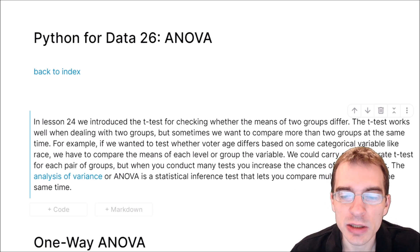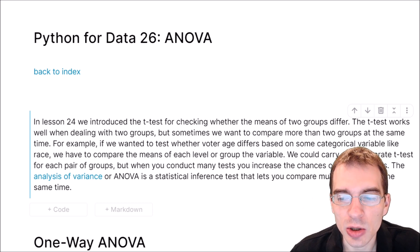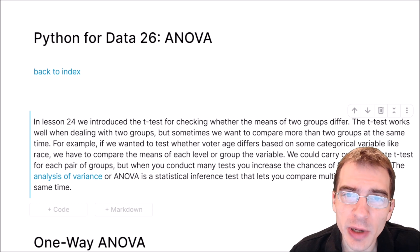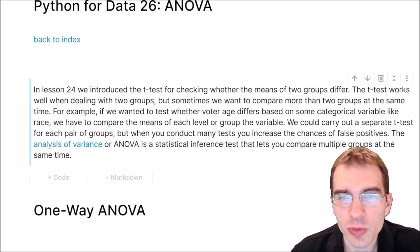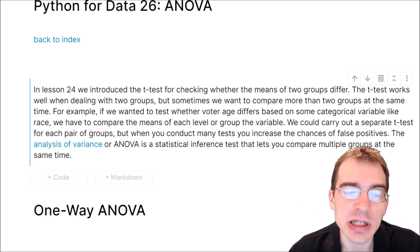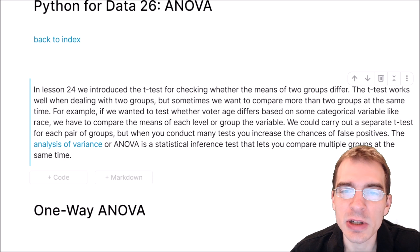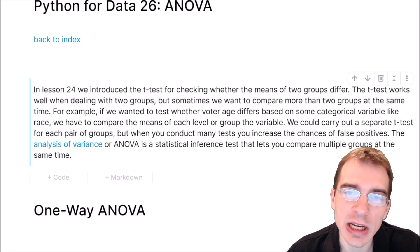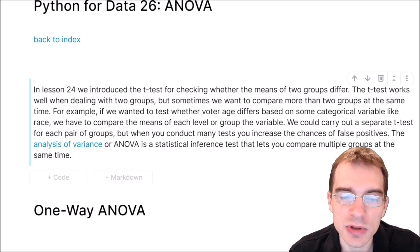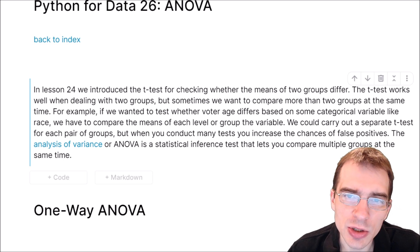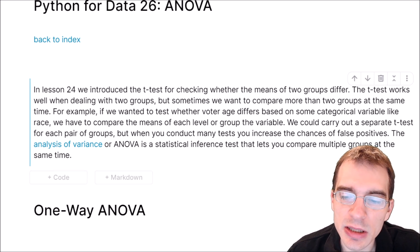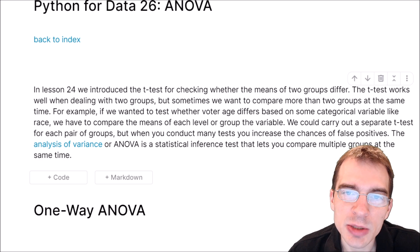For example, if we wanted to test whether voter age differs based on some categorical variable — say the voter's race — we would have to compare the means within each group of that categorical variable. We could try to carry out a separate t-test for every single pair of groups, but when you conduct many different tests like that, you increase the chances of getting false positives. The analysis of variance, or ANOVA test, is designed for situations like this where you want to compare multiple different group means all at the same time.